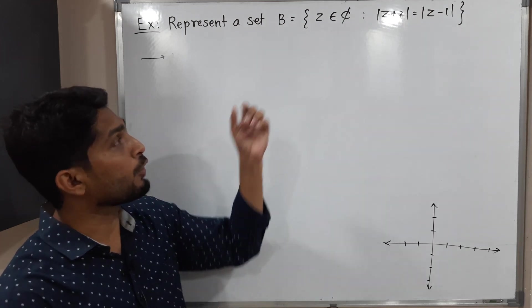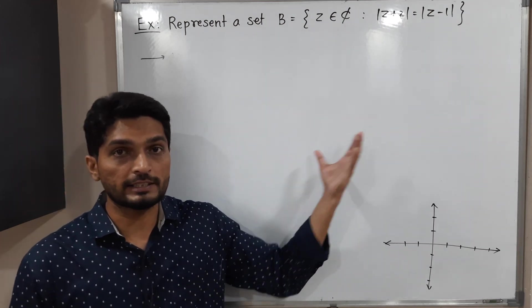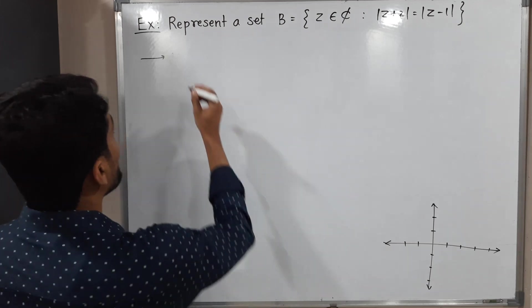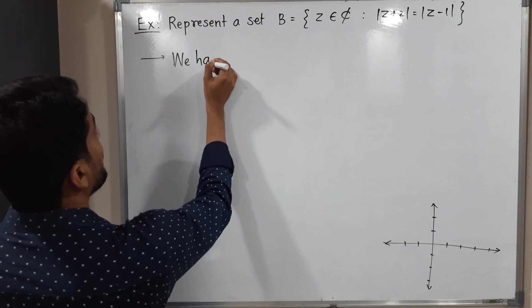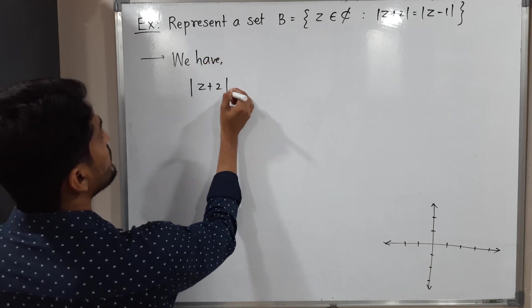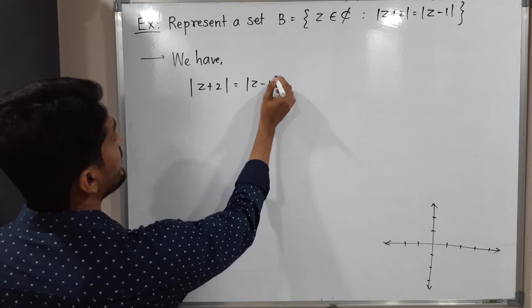So B is a collection of all complex numbers which satisfy this condition. So let us start to discuss that condition first. What we have? We have mod z plus 2 is equal to mod z minus 1.